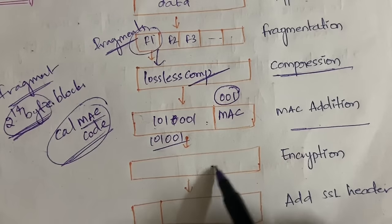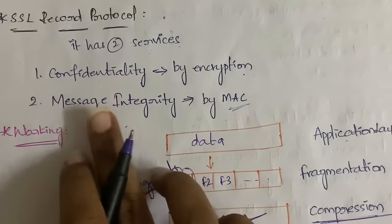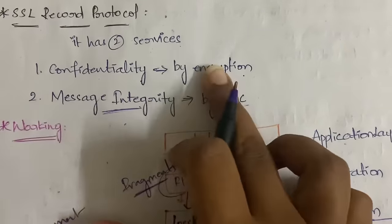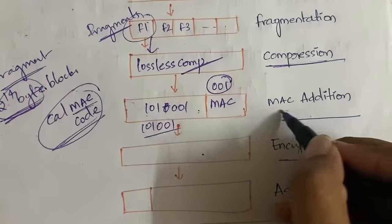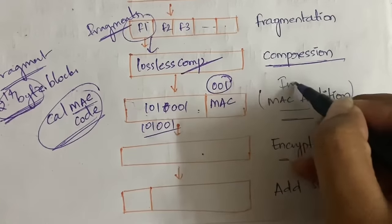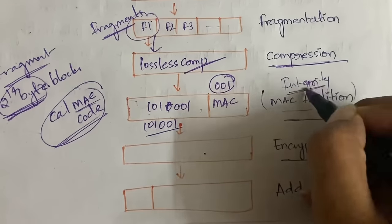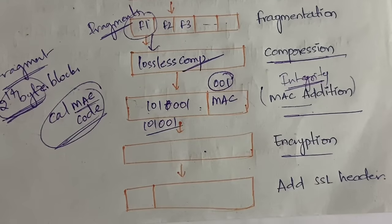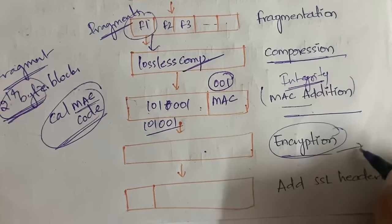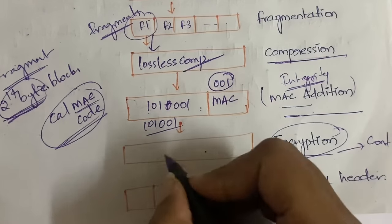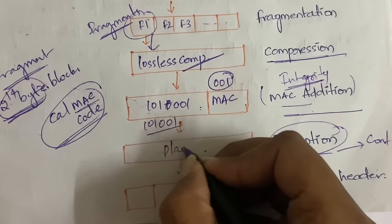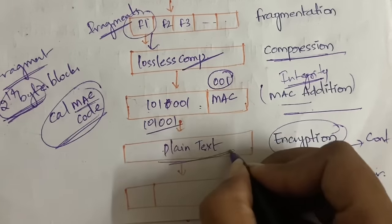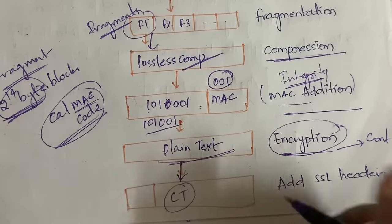Once MAC addition is done, next you need to do encryption on this complete data block. MAC addition ensures message integrity, and encryption ensures confidentiality of the message. In the SSL Record Protocol, we said we get both confidentiality and message integrity - in the Handshake Protocol we get authentication. The data before encryption we call plaintext, and once you do the encryption you get the corresponding ciphertext.